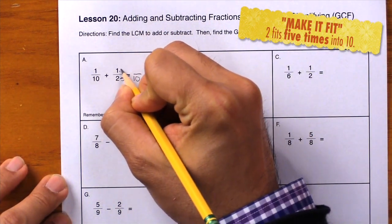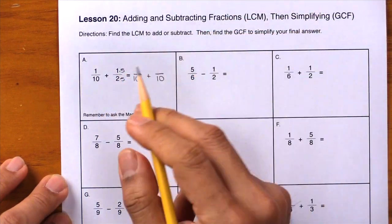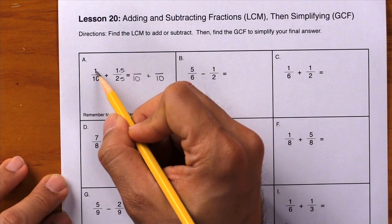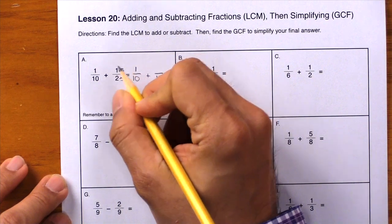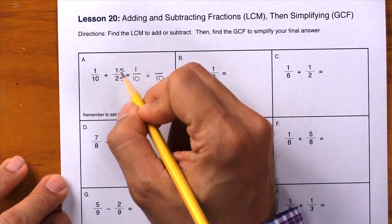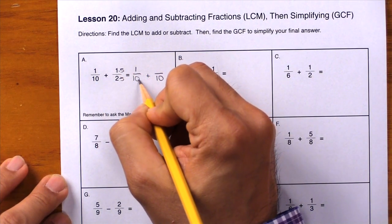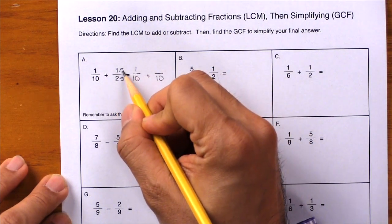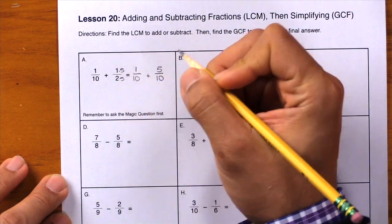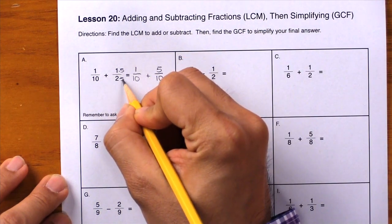Now everything becomes just a series of multiplication problems. The 1 here we didn't do anything to it, so just write it down. The 10 we didn't do anything to it, so write it down and you notice that it's already there. Here we have 1 times 5, that gives you 5. 2 times 5 equals 10, write it down, it's already there.